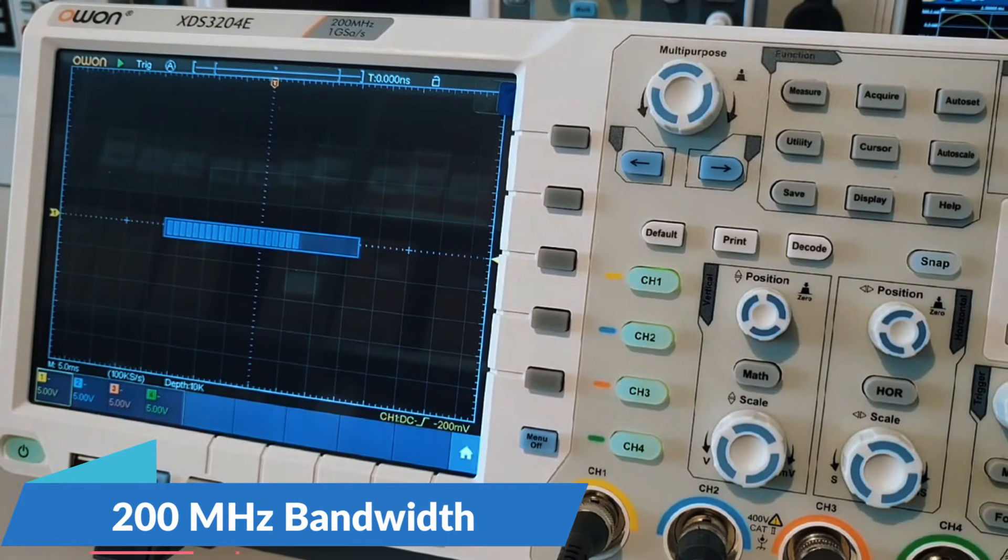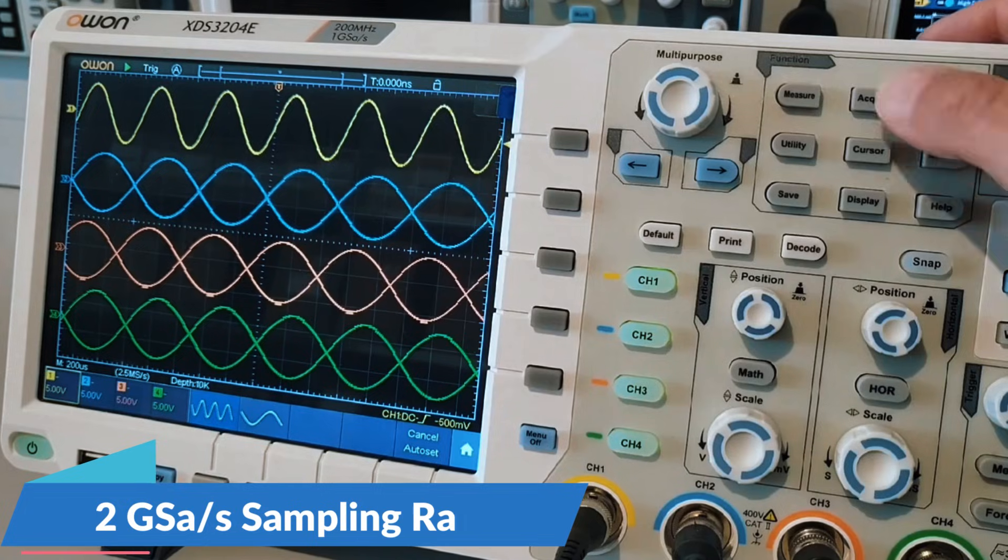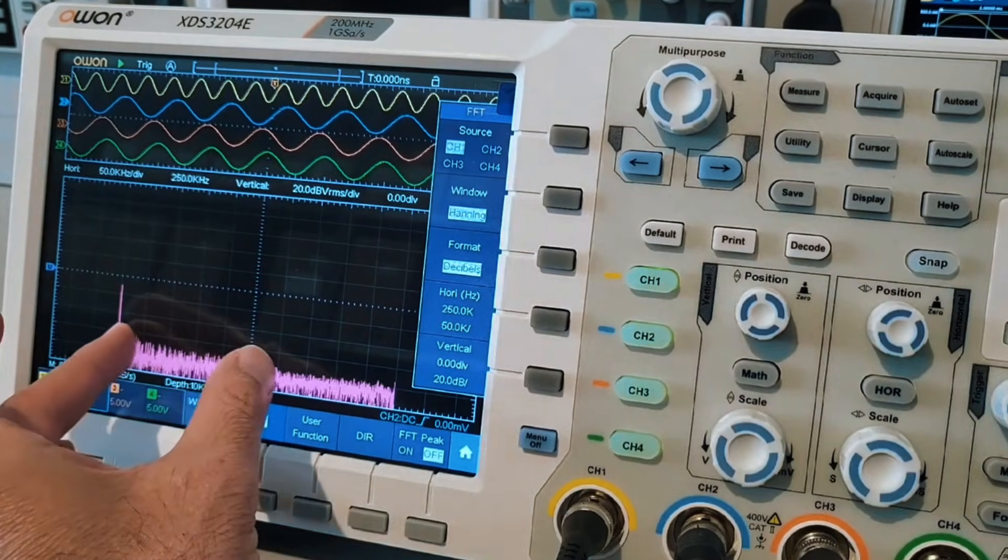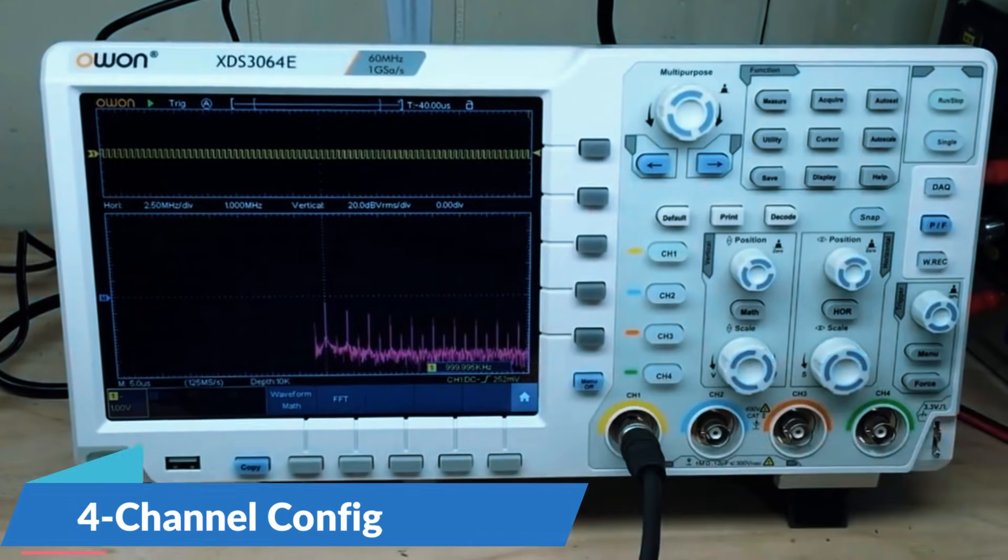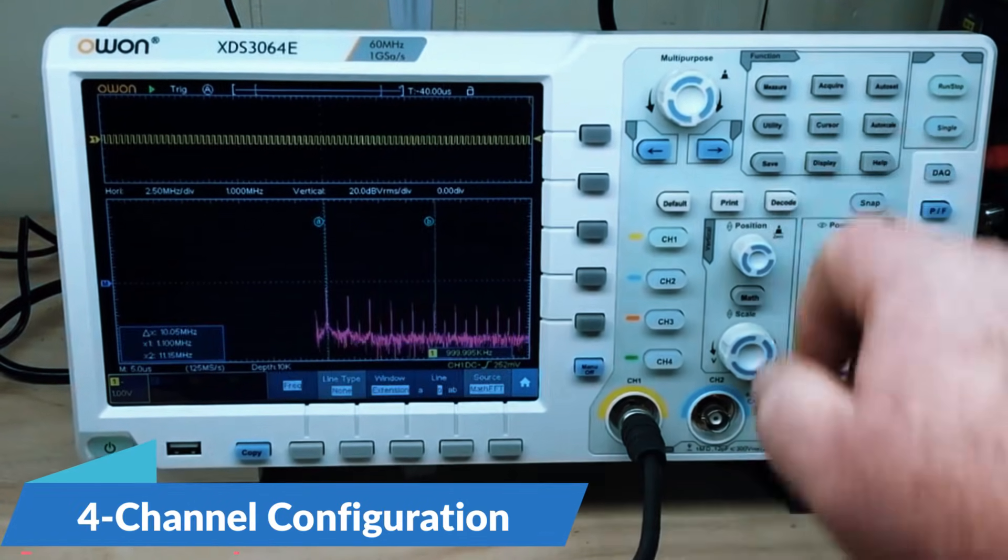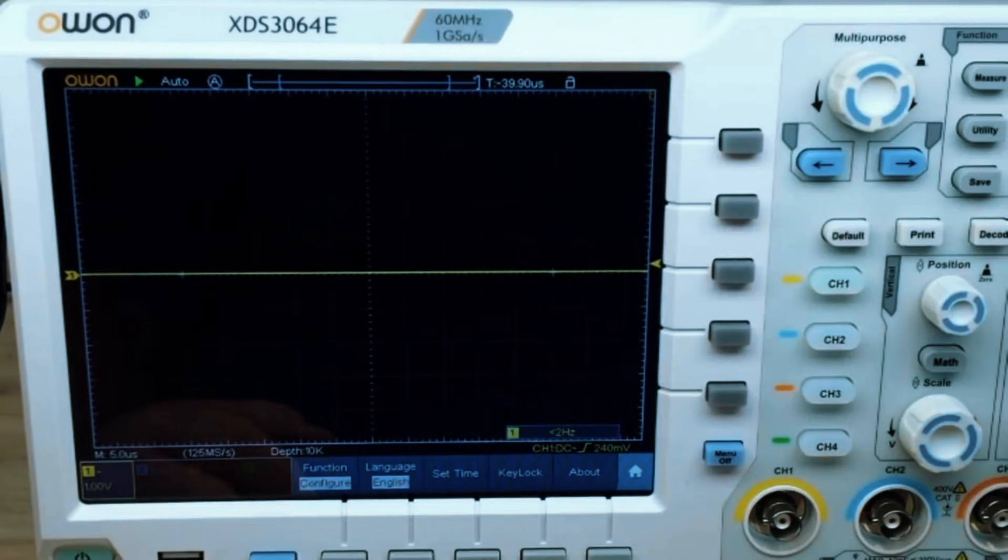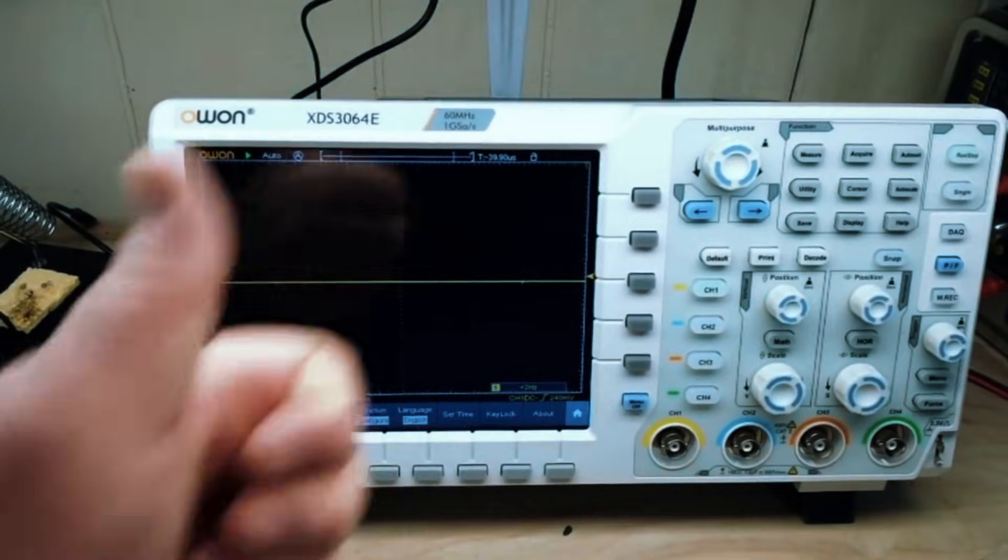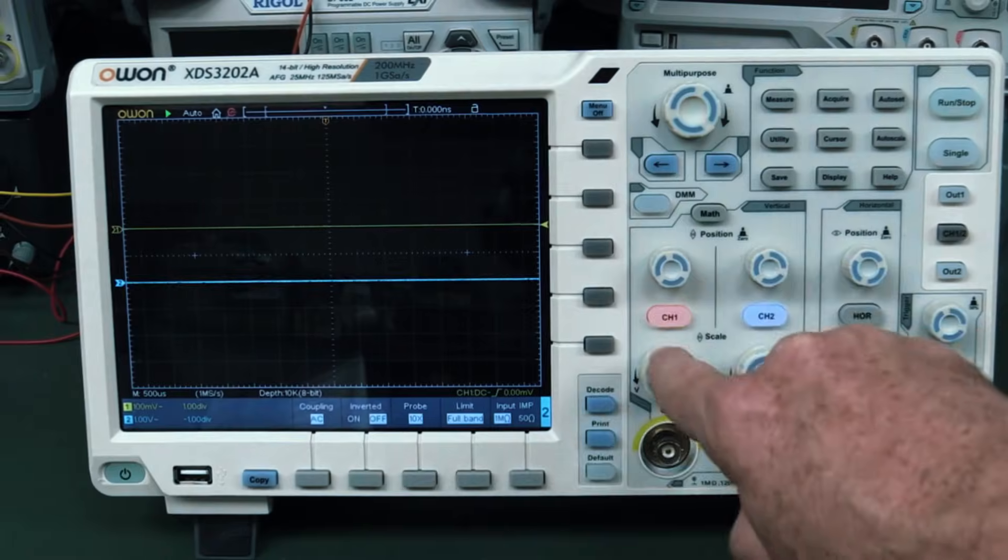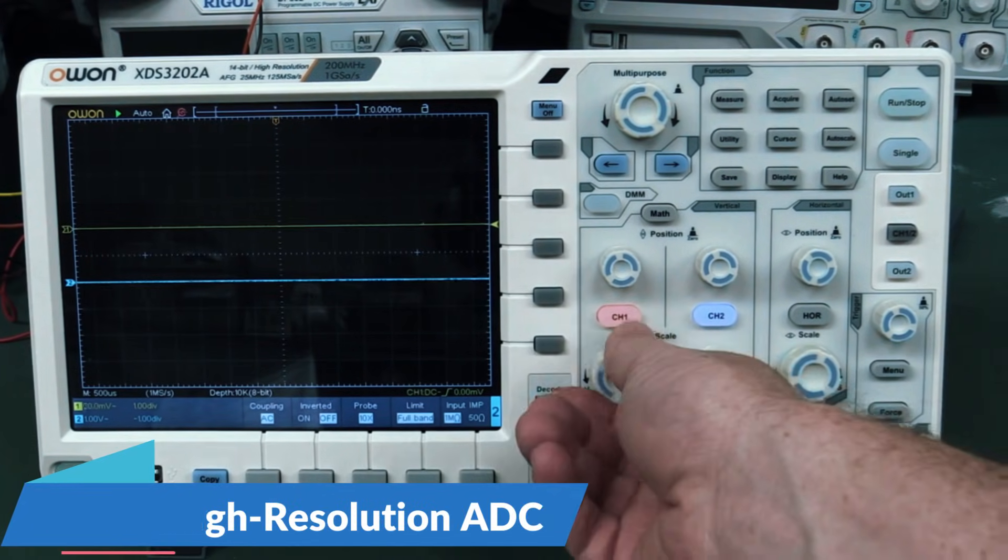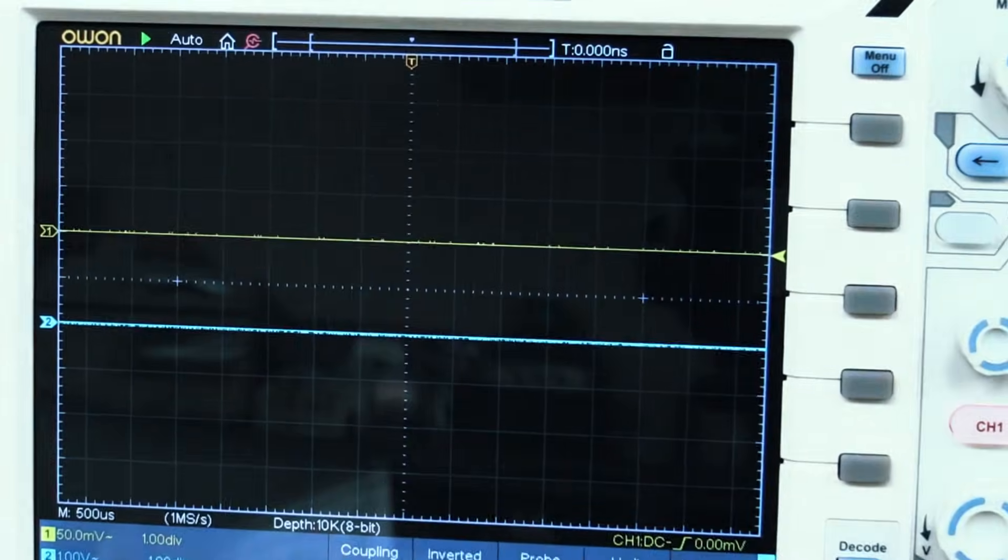This oscilloscope features a 200MHz bandwidth and a 2 giga samples per second sampling rate, making it highly effective for capturing fast transient signals with excellent clarity. What truly sets it apart is its 4-channel configuration, allowing for detailed multi-signal analysis, a must-have for complex circuit debugging, embedded system testing, and RF signal observation. Another major advantage is its 12-bit high-resolution ADC. Most oscilloscopes in this price range only offer 8-bit resolution, which means less detail in waveform representation.